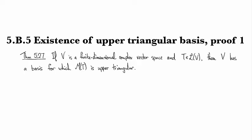All right so with that in mind here's the theorem. If V is a finite dimensional complex vector space and you've got an operator on it, then V has a basis for which that operator has an upper triangular matrix.